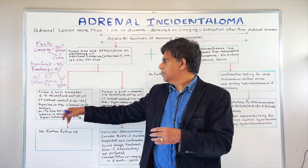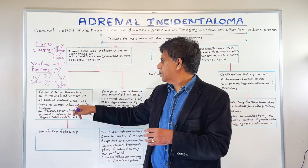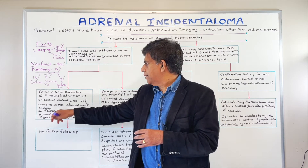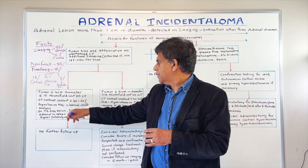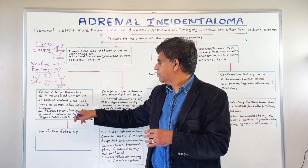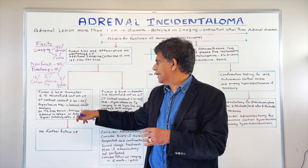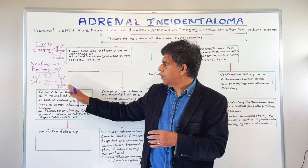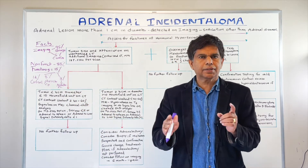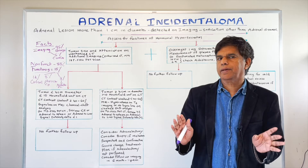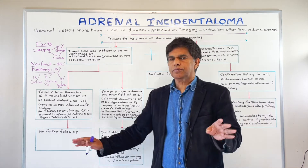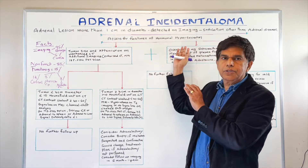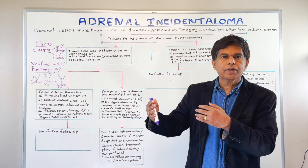Other things you can do: signal loss on MRI with chemical shift analysis, and 18F FDG PET CT with SUV max less than 5, or adrenal-to-spleen or adrenal-to-liver signal intensity ratio less than 1. All of these indicate a benign finding — no further follow-up is needed, though you still need to make sure it's not a hormone-secreting tumor.